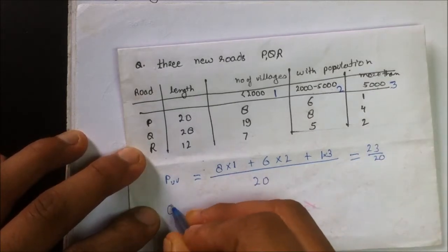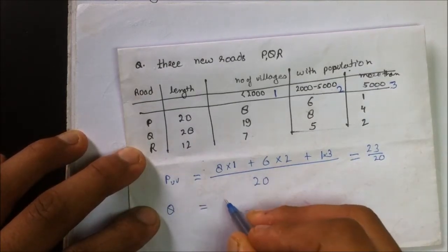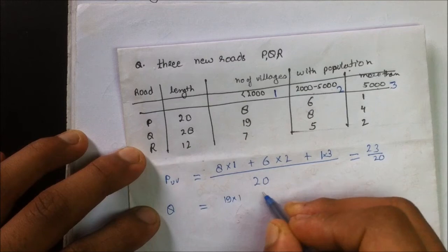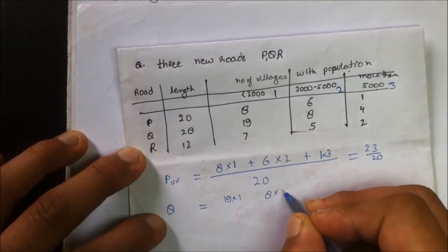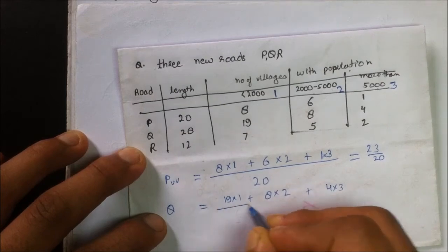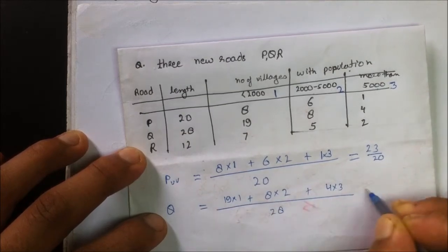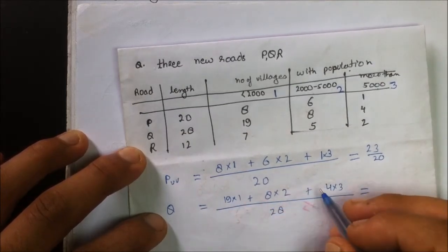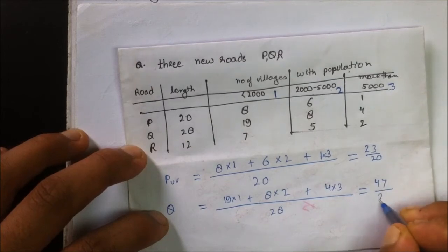Same for Q, the utility value is 19 times 1 plus 8 times 2 plus 4 times 3. Summation of all three divided by the length of the road 28, which gives 47 by 28.